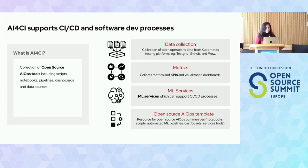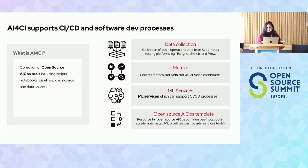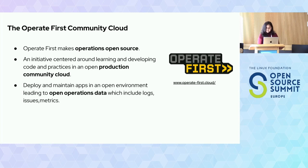We build all of these tools and services on an open operations community cloud called the Operate First community cloud, which provides the ML tools required to build these services — like the underlying clusters, Jupyter notebooks, Superset dashboards, S3 storage system, and database engines. We also make all the notebooks, templates, pipelines, and scripts available open source. So what's the Operate First community cloud? It's basically an initiative centered around open sourcing the operations of software. It provides us with a real production community cloud which can be used to operate software and applications openly.